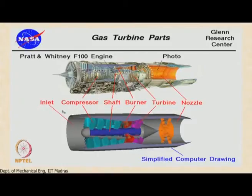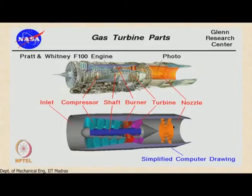The major components are an intake, compressor, combustor which is also called the burner, turbine, and a nozzle. The nozzle itself can have variations — for example, a simple turbojet engine nozzle or an afterburning turbojet engine nozzle, which happens to be slightly more complicated.